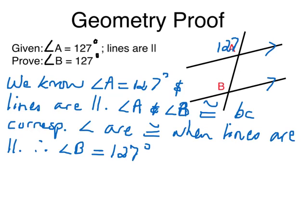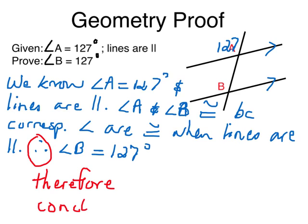I just want to write a little note here for you to remember. This symbol here means therefore. It also means conclusion. So rather than writing those long words, therefore, or the word conclusion, we just put the dot, dot, dot, and that's it. We are done with the proof.